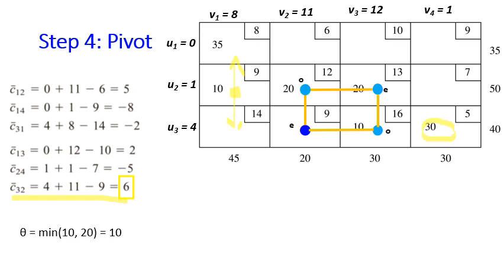Take the minimum of the values among all the odd cells, so the minimum is 10. Now you subtract the values in the odd cells by 10 and increase the values of the even cells by 10.